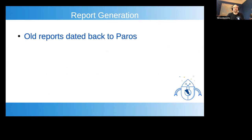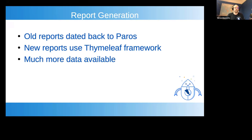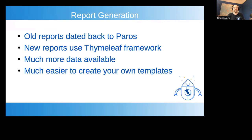Now let's talk about report generation. The reports in ZAP 2.10 dated back to Paros days — ZAP is a fork of an old project called Paros Proxy — and they were very basic. Feedback from our questionnaires showed people felt the reports weren't very good. Based on that, we've created a new report generation add-on using the Thymeleaf framework, an open source framework that is very flexible and powerful. We have a lot more data available and it's easier to create your own templates.